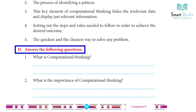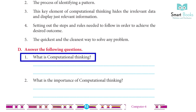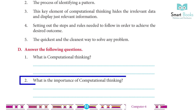D) Answer the following questions: 1) What is computational thinking? Answer: Computational thinking is the process of breaking down a problem into simple enough steps. 2) What is the importance of computational thinking? Answer: Computational thinking logically segments a problem into smaller segments. It is a method of problem solving that aids the user in comprehending, interpreting, and solving issues.